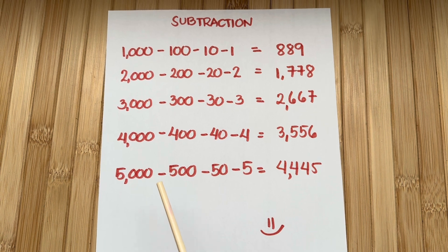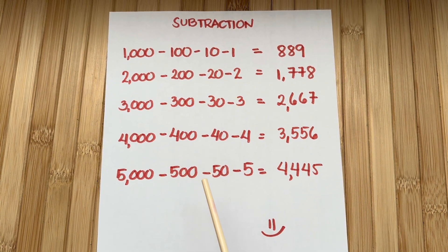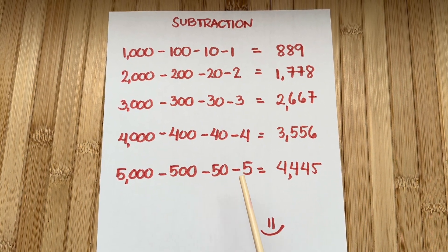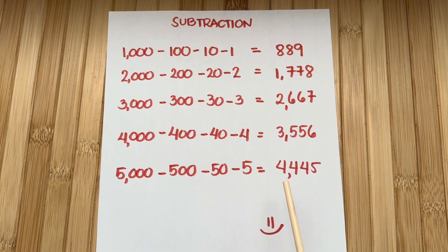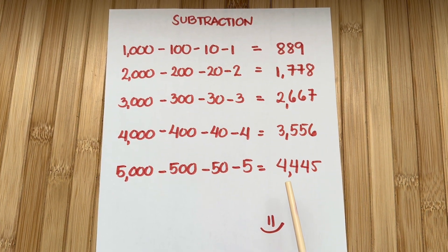And lastly, 5,000 minus 500 minus 50 minus 5 equals 4,445.